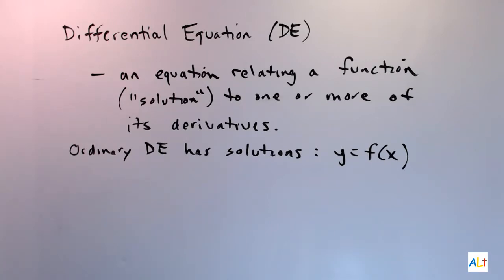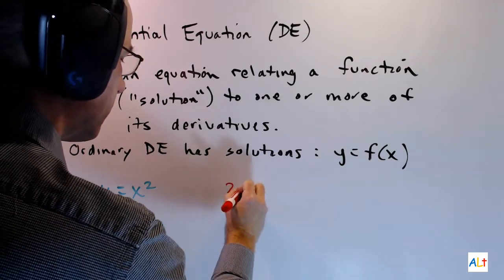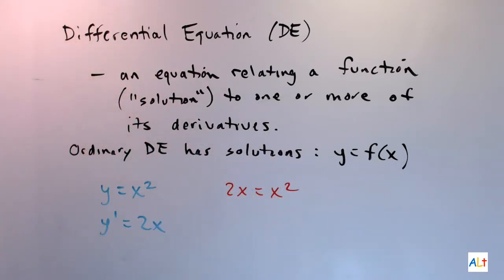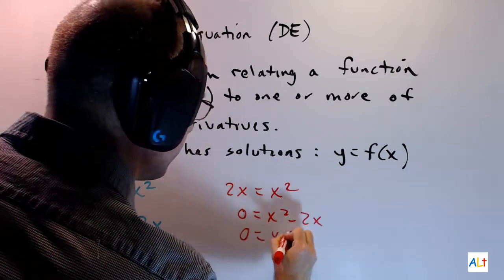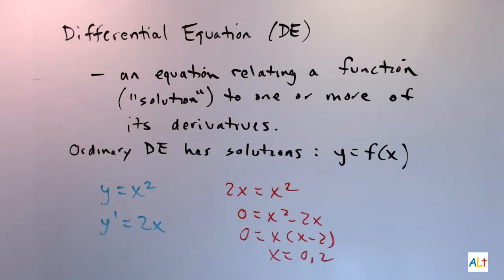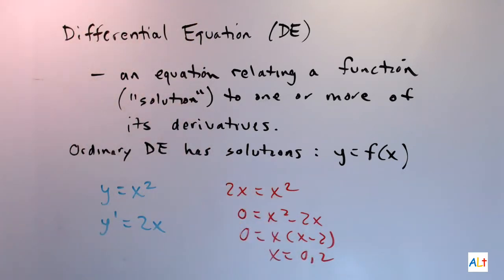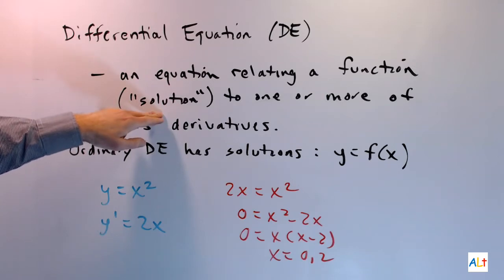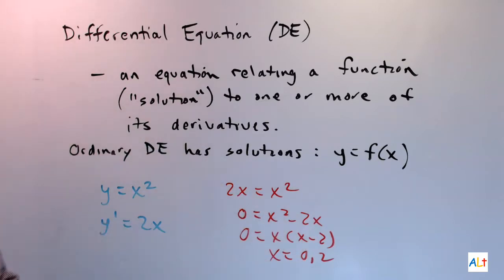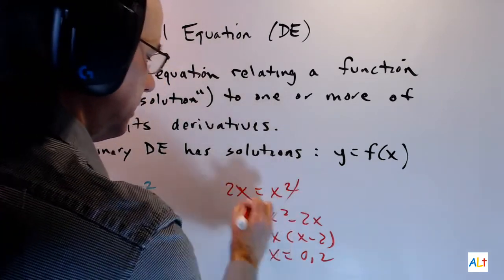So what does this mean? Well, here's an example. Here's a function. Here is the derivative of that function. Is this what we mean by a differential equation? The answer is no. If you go to solve this equation, this is what you get. Well, that's not what we're looking for. x equals zero or x equals two is indeed a solution of this equation. But the whole point of a solution function in differential equations is that the solution function should be valid for all possible x values, not just a couple. So this is not at all what we're talking about.